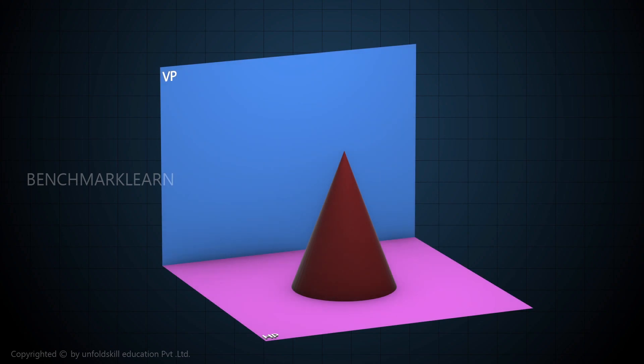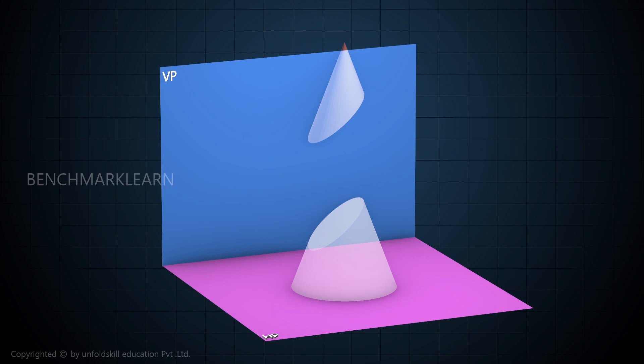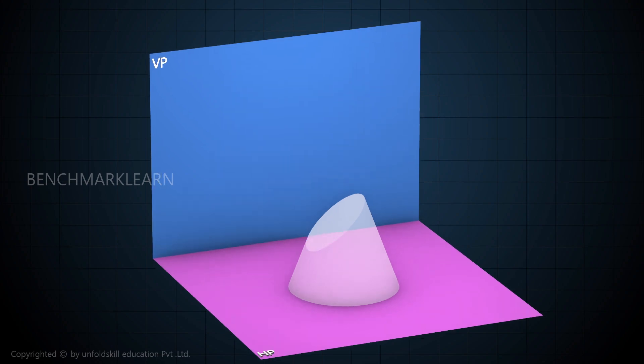Consider the cone is resting on its base. Now take a cutting plane perpendicular to VP and inclined 40 degrees to HP. Cut the cone using this plane such that the plane bisects the axis of the cone. Remove the upper section of the cone.